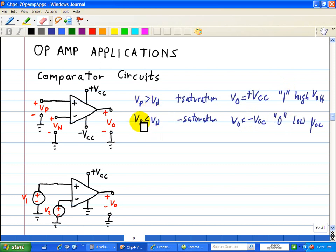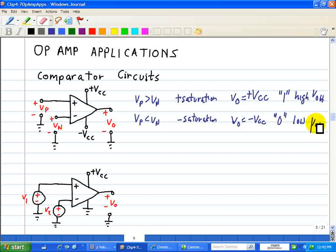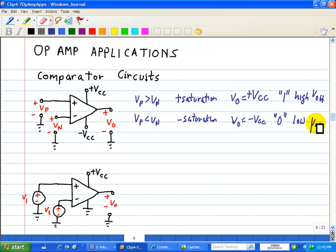The output voltage levels associated with the high and low states are usually denoted, as I mentioned before, VOH or VOL, which are respectively the high and low states. These levels are determined by the positive and negative power supply voltages, which can be different from the plus or minus 15 volts commonly used in linear applications of op amps.